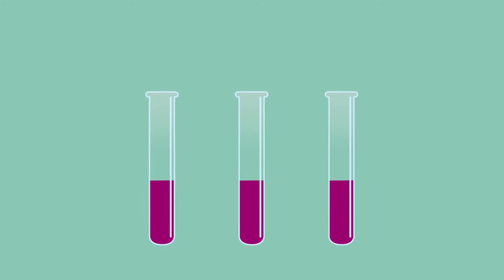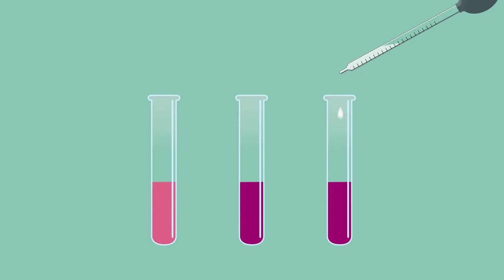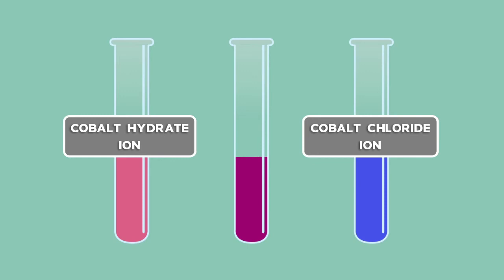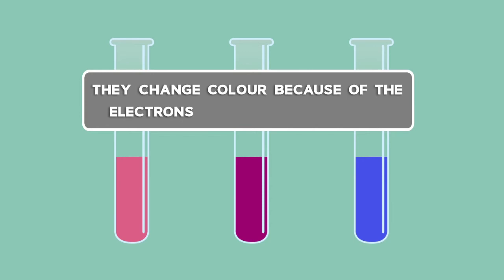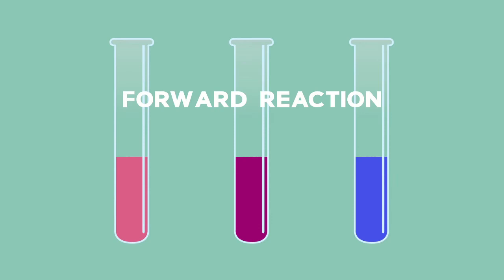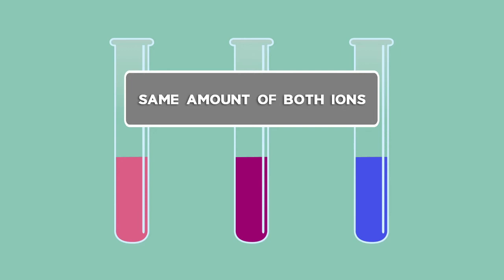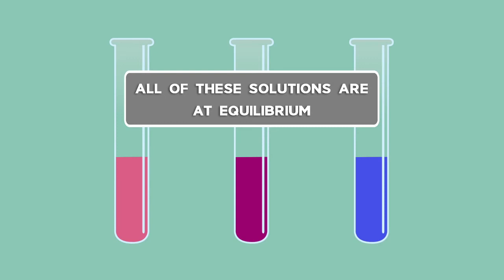Let's look at a practical of the effect of concentration on equilibrium. The reaction shows two different positions of equilibrium on the left and right. On the left is the pink cobalt hydrate ion; on the right is the cobalt chloride ion. The ions change colour because of the electrons around the metal ion. If the forward reaction is favoured, more blue ions are made as products. If the reverse reaction is favoured, more pink ions are made. The colour in the middle occurs where there are roughly equal amounts of both ions. All of these solutions are at equilibrium, but the ratios of product and reactant differ, giving a different colour.